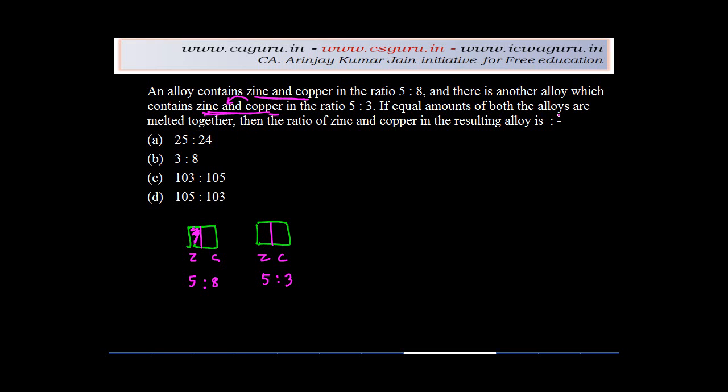If equal amounts of both alloys are melted together, they're saying there is a certain defined quantity of alloy A and alloy B which are melted together, and they're asking if there is a third alloy or melted stuff which is prepared, what is the ratio of zinc and copper in that? For the sake of convenience, let's assume that we melt 1 kg of alloy A and 1 kg of alloy B.